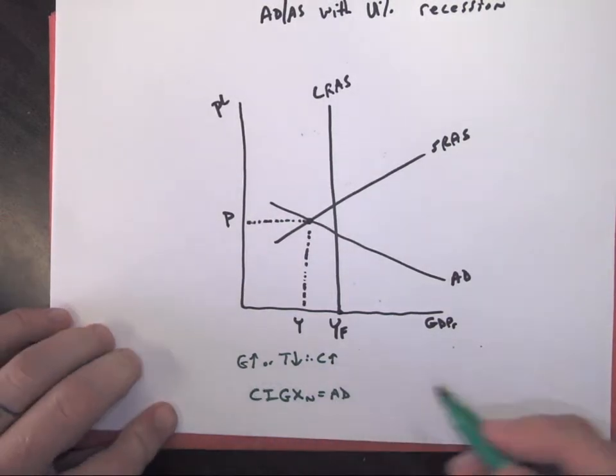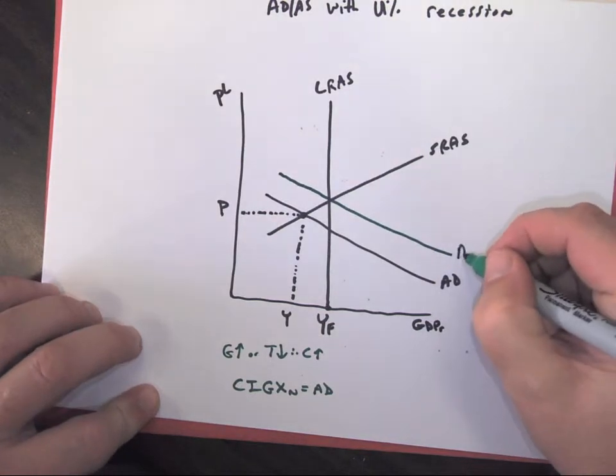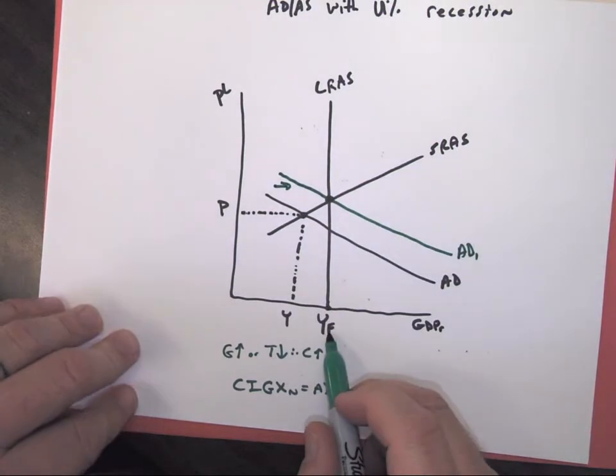So now if we get one of these policies to work, you're going to shift it to the right, because remember, we increased to the right. And when we do that, we want to get back to full employment. We want everyone working.